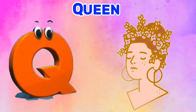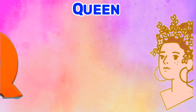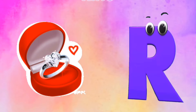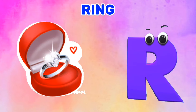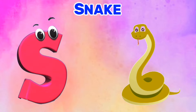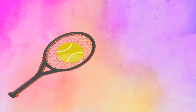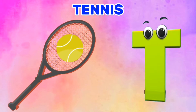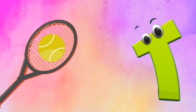Q is for Queen. Qu. Qu. Queen. R is for Ring. R. R. Ring. S is for Snake. S. S. Snake. T is for Tennis. T. T. Tennis.